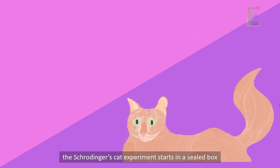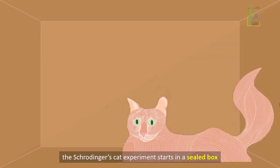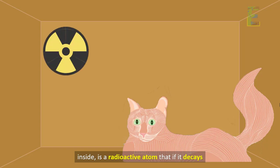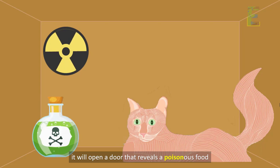The Schrödinger's cat experiment starts in a sealed box. Inside is a radioactive atom that if it decays, it will open a door that reveals a poisonous food. The box also contains a cat that will eventually eat the food if it is available.